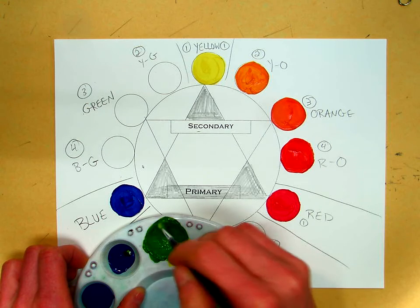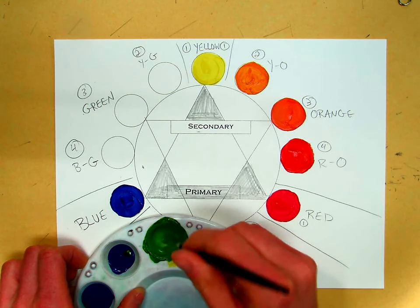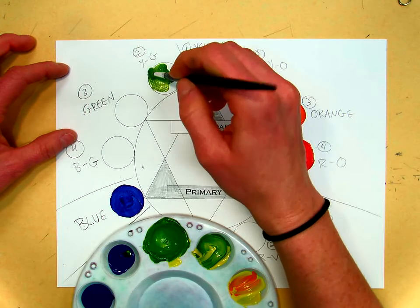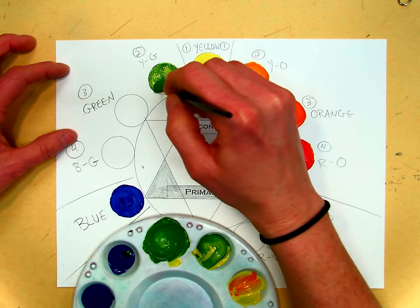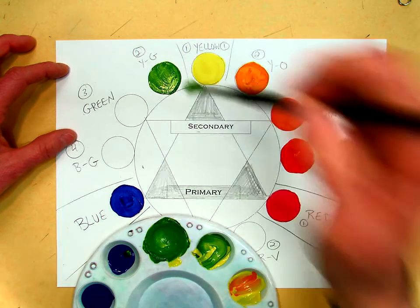You really want to try and get your first color to be pretty good. It'll help the rest of the color wheel out. So you want to mix your yellow-green first. Once you get it mixed together, then you can paint it in the yellow-green spot. Once you get it painted in, the next step then is we're going to make green.